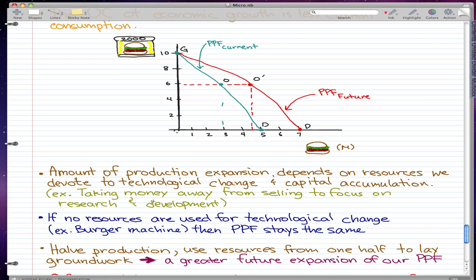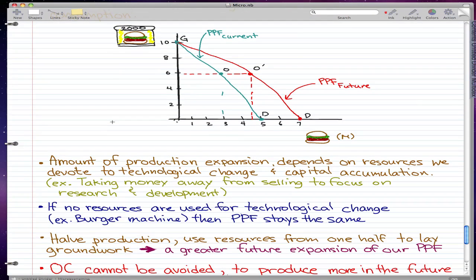But if there are no resources used for technological change—for example, we did not put any resources or money into future research and development—then the PPF stays the same. If we're making burgers forever using the old fashioned way without using the Burger Machine 2000, if we don't put any resources into the future, then our PPF will stay in this blue line forever until we actually do put some investment into the Burger Machine 2000.